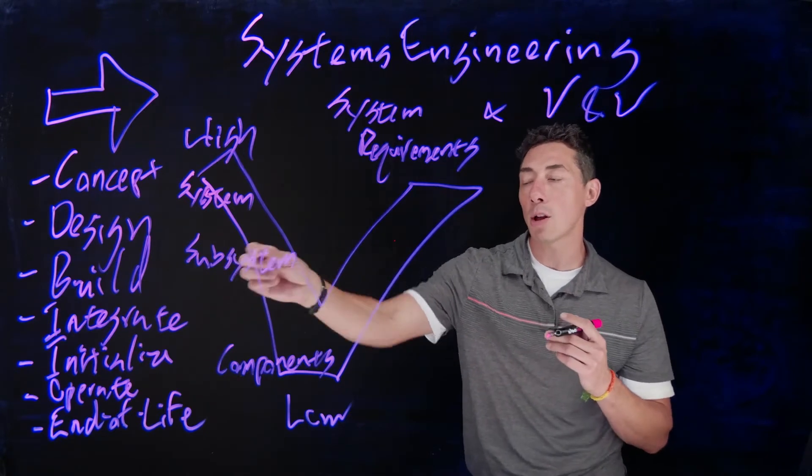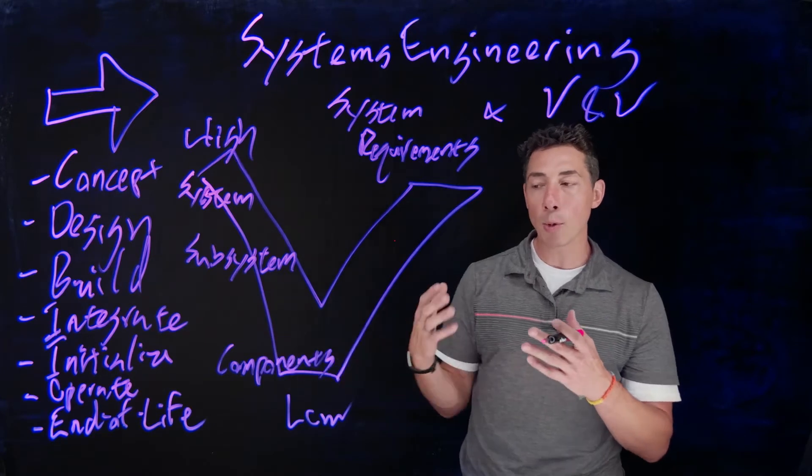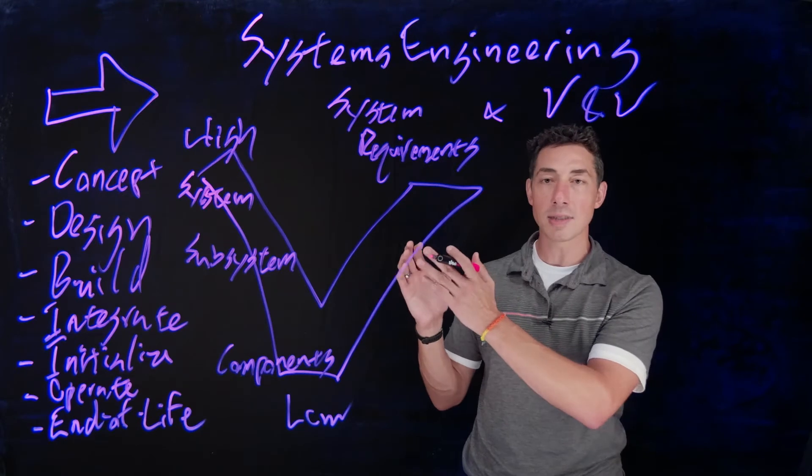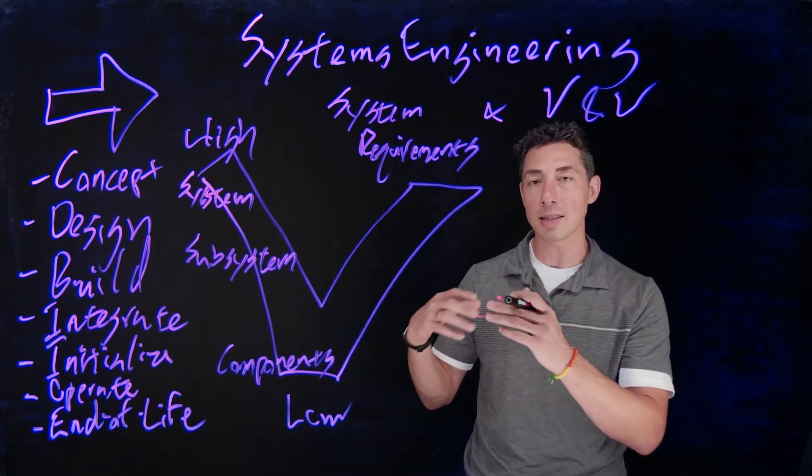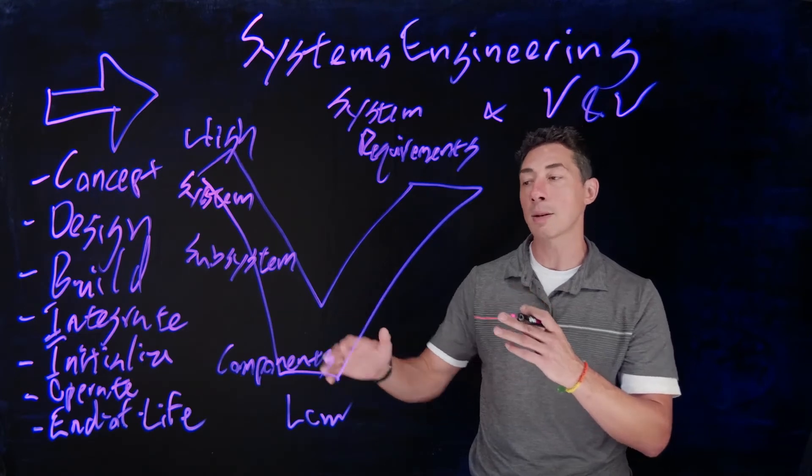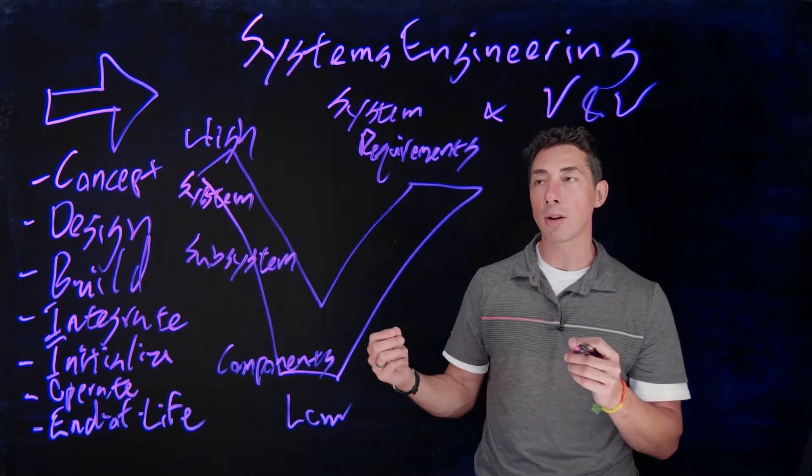But then in addition, you're going to say, well, in order for the payload to be able to meet those requirements, I'm going to need a series of components. I'm going to need this optomechanical design, and I'm going to need a lens this big, and I'm going to need a focal plane that's this capable, and I'm going to need a data processing unit that's this fast. So each of those requirements will then be drilled down into the component level. And a good system engineer will help you write those requirements and distribute those out.